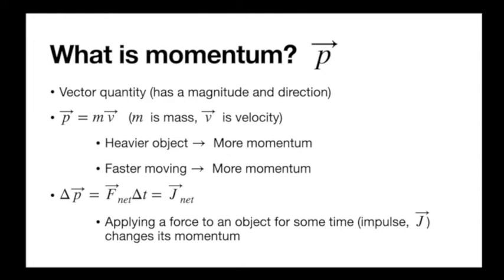If two objects move with the same velocity, the one with larger mass has larger momentum. If two objects have the same mass but one is moving faster, the faster one has larger momentum. So momentum describes the motion. And changes in momentum — delta p — not just momentum itself, but a change in momentum, is caused by a force.